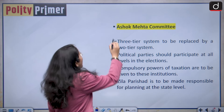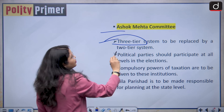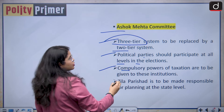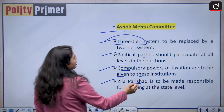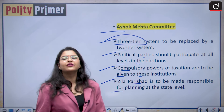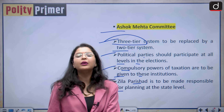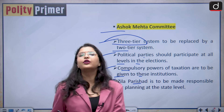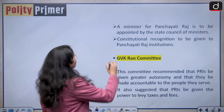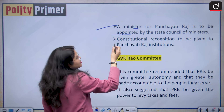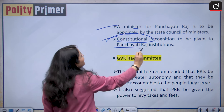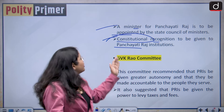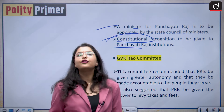Moving forward to the Ashok Mehta committee. It suggested that a three-tier system be replaced by a two-tier system. Political parties should participate at all levels in the elections. Compulsory powers of taxation are to be given to these institutions, and the Jila Parishad is to be made responsible for planning at the state level. For the very first time, the Ashok Mehta committee talked about giving constitutional recognition to the local self-governments in India.